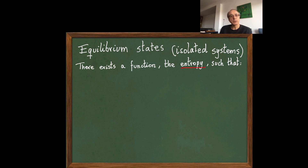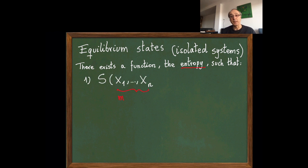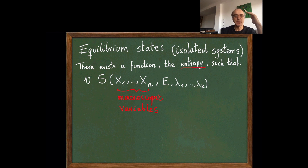How does thermodynamics address this problem? The idea is to postulate the existence of a function—the entropy—such that it is maximum at equilibrium. This will allow us to find these equilibrium values. Let me list the main properties of this function, the entropy.